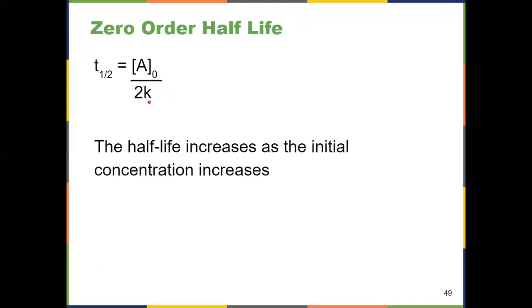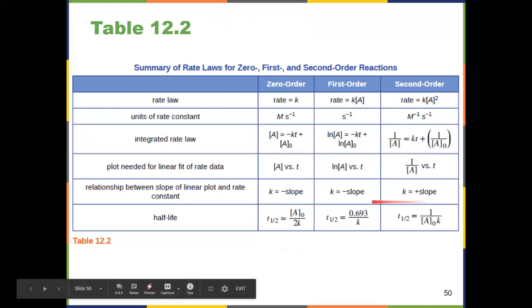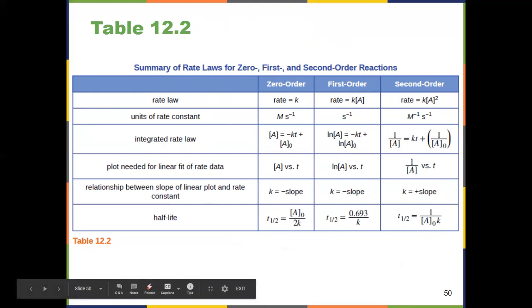For zero-order reactions, T-half equals initial concentration over two times the rate constant. All of this is summarized in table 12.2 from the textbook, which covers integrated rate laws, units, and half-life equations for zero, first, and second-order reactions. If you've memorized all this information from Chapter 12, you'll be well off for the test. The next question — why do these rates differ at all, why first, second, or zero order — comes down to collision theory, which we'll cover in Part 4 of Chapter 12.